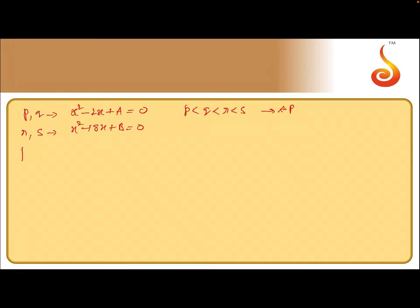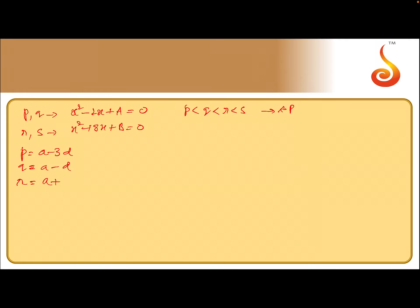Let p = a - 3d, q = a - d, r = a + d, and s = a + 3d, such that p, q, r, s are in increasing order and in arithmetic progression.